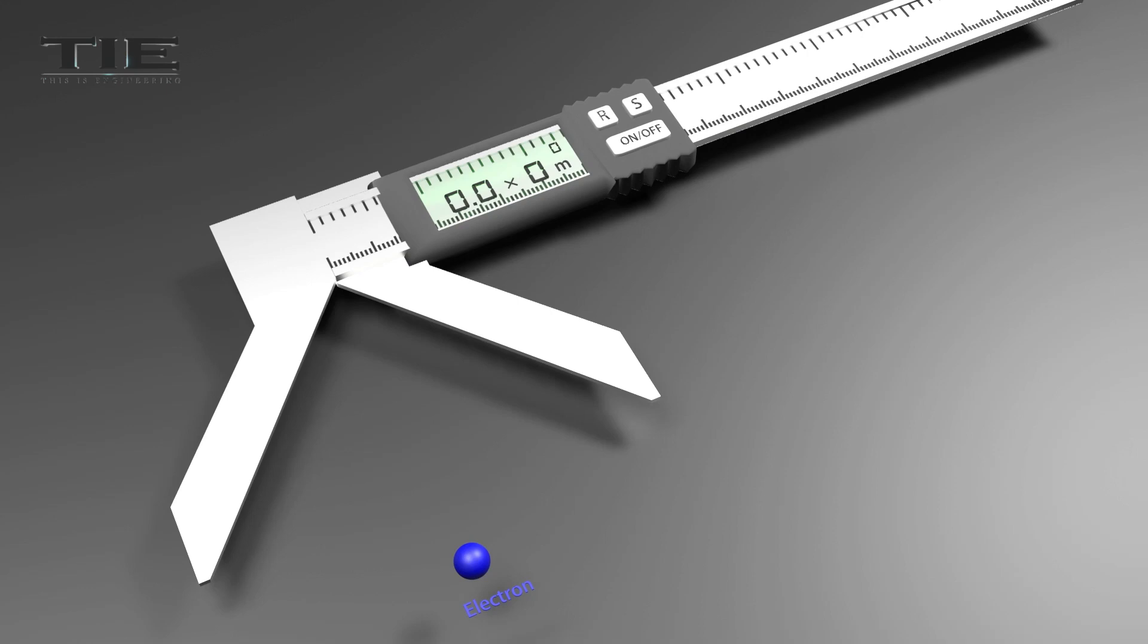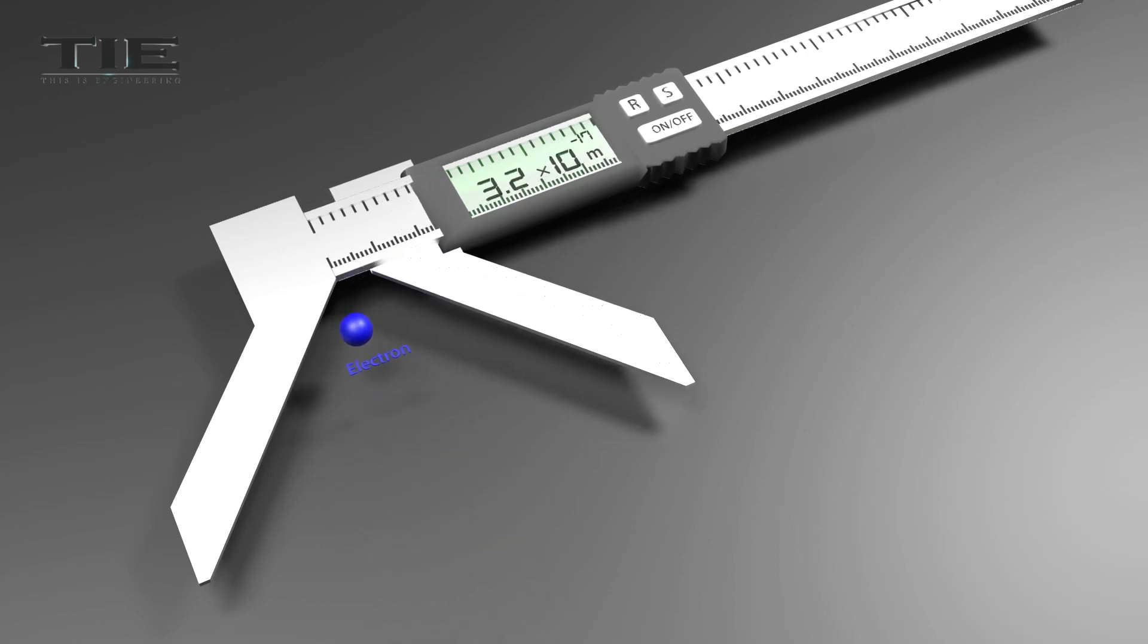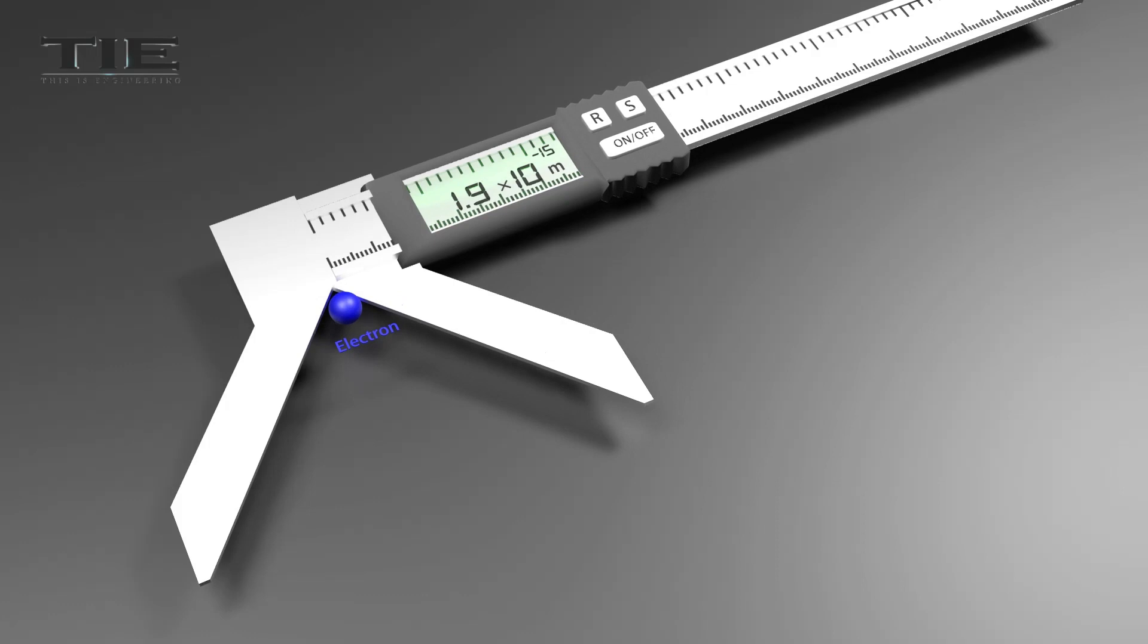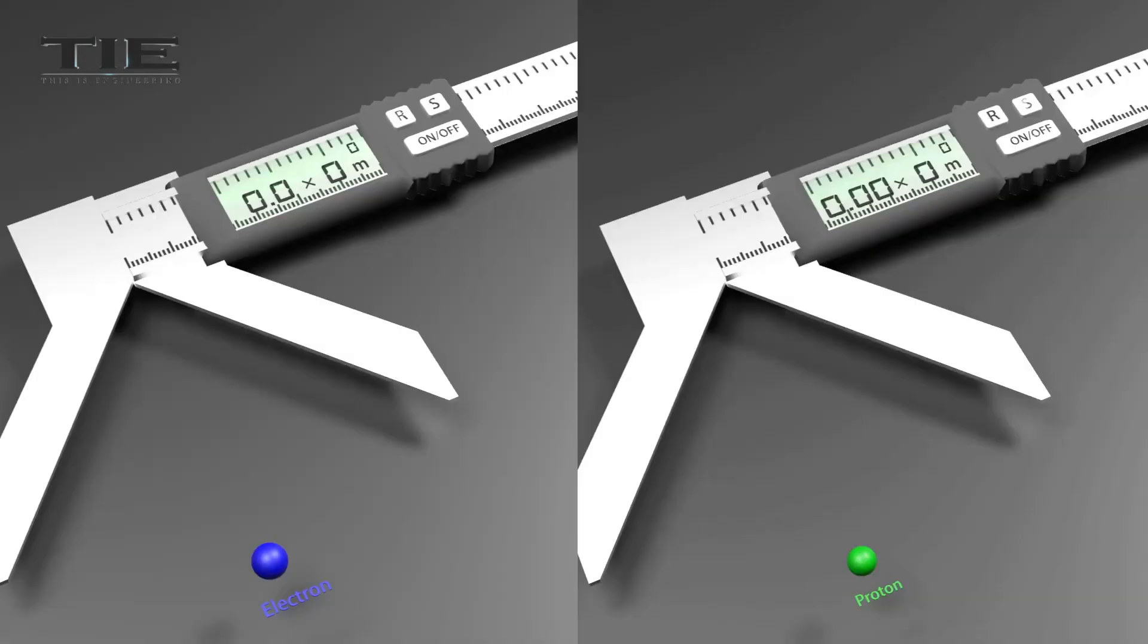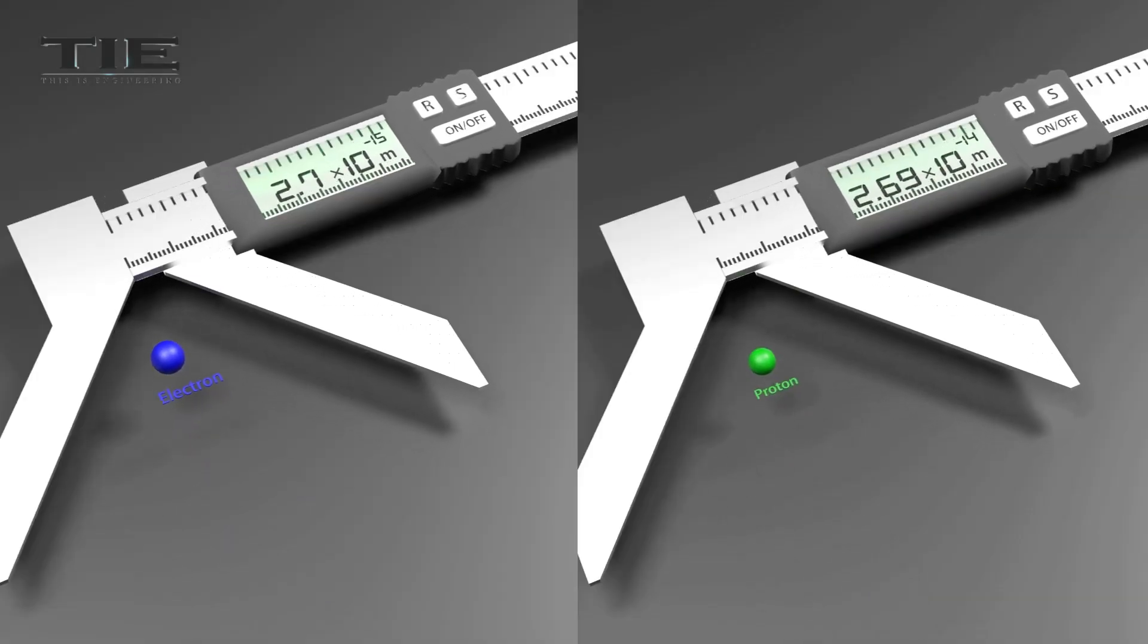The radius of an electron is 1.9 × 10^-15 meters. An electron is about three times as large as a proton.